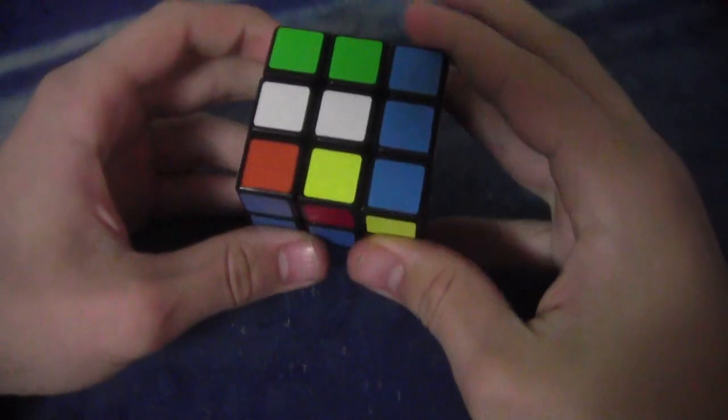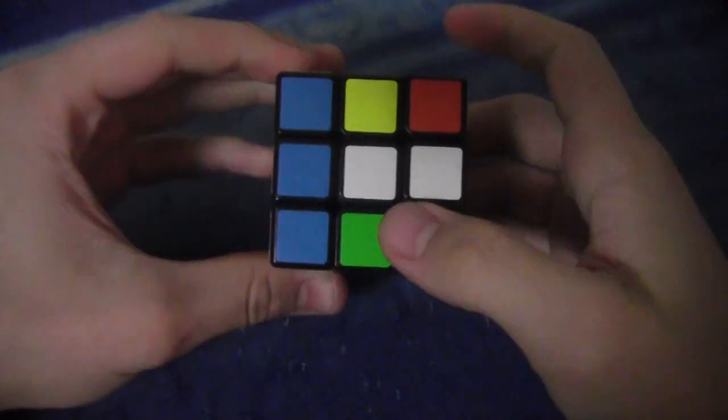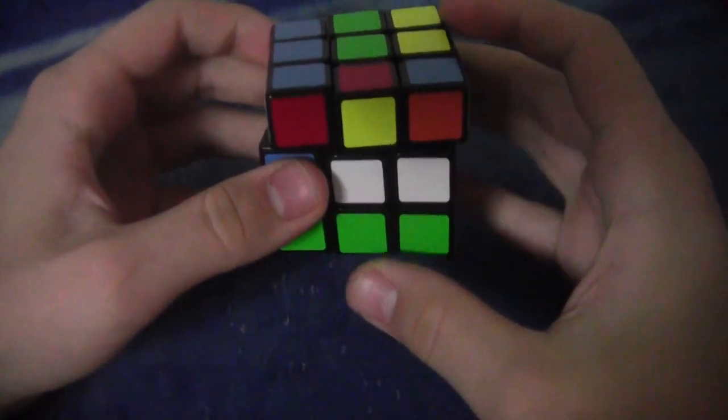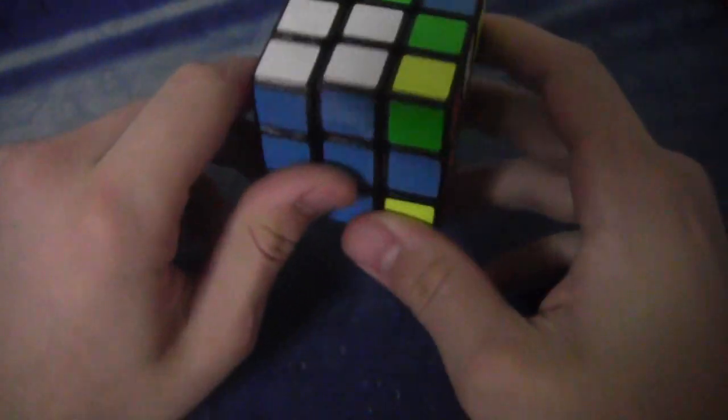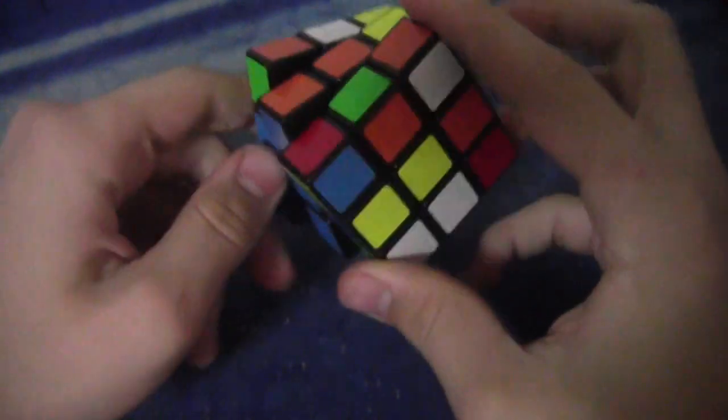So then I bring this orange piece up, and then F2 L' U' L F2. And that is eight moves, and it makes the first F2L pair and the cross.